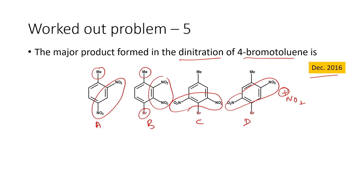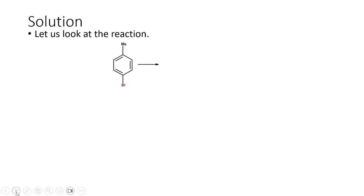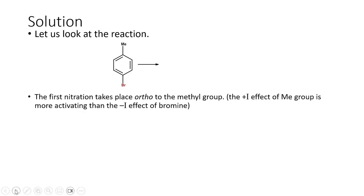Once the first nitro group is introduced, the system becomes deactivated because of the presence of the nitro group. For the second nitration to take place, we have to look at which carbon is still going to be electron-rich for the nitronium ion to attack. Once we identify these two things, it becomes easy to predict what the product will be.